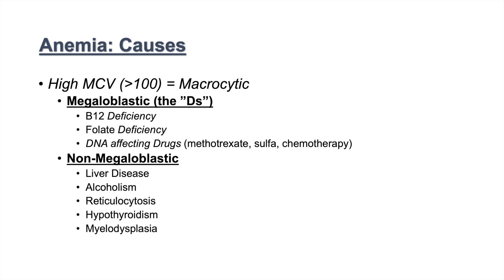So remember: high MCV, greater than 100, is macrocytic anemia. Break it down into megaloblastic versus non-megaloblastic. With megaloblastic, it's the Ds — deficiencies and DNA-affecting drugs. Non-megaloblastic, think of alcohol and liver disease in particular, and then the important ones not to miss: hypothyroidism, reticulocytosis, and myelodysplasia.